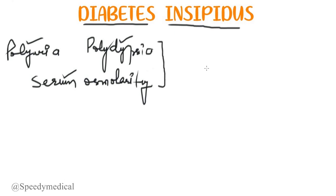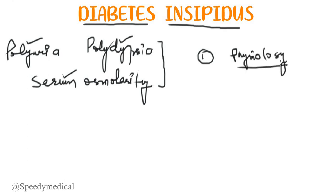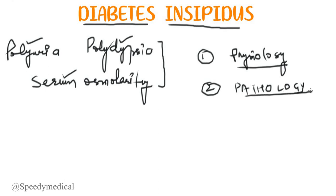To make the video very simple and easy to understand, I have divided it into two parts. In the first part we will look at the basic physiology — how things take place under normal conditions. In the second part we will look at the pathology of diabetes insipidus — what is different that is causing the disease.